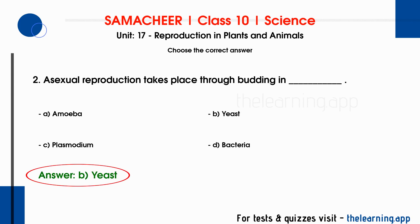In this case, budding is another type of asexual reproduction. A bud forms on the organism, it grows, then detaches and germinates into a new organism. This process is called budding — for example, Yeast.